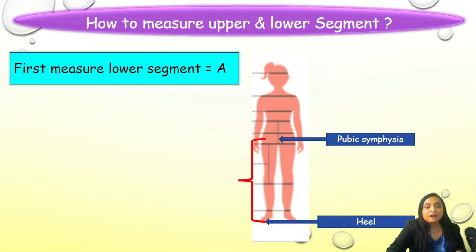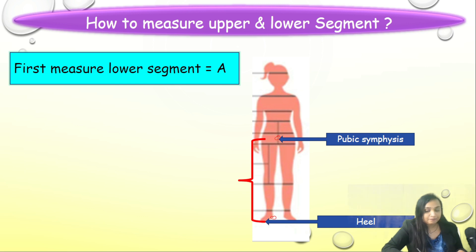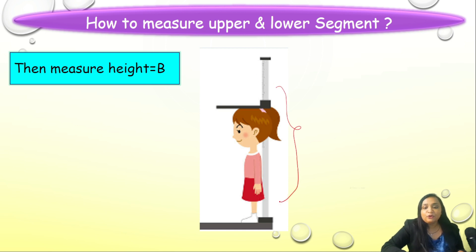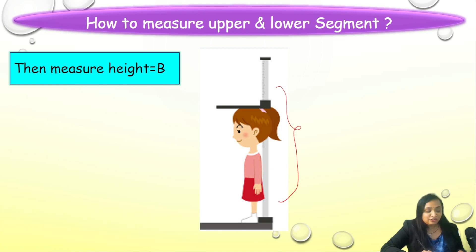To measure the lower segment, take a measurement from the pubic symphysis till the heel. Ask the child to stand still with the support of a wall, palpate the pubic symphysis, and check the alignment of the buttocks as well as the heel, then measure the lower segment. To measure height, use a stadiometer, ensuring buttocks, heels, and shoulder blades are in one plane with maintenance of the Frankfort plane. The upper segment is then calculated by subtracting the lower segment from the total height. Please refer to the anthropometry lecture linked in the description for detailed measurement guidance.